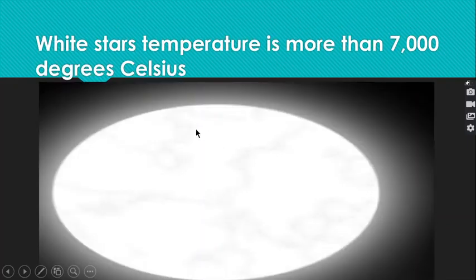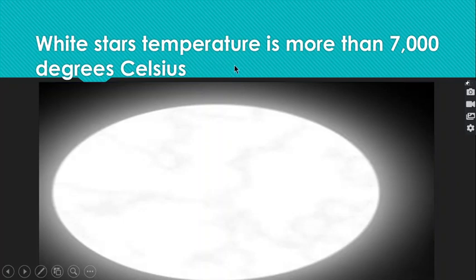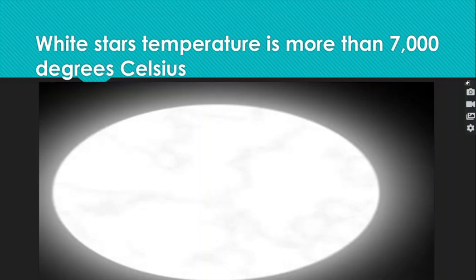Now, white stars. These are the white stars and their temperature is more than 7,000 degrees Celsius. These are colder and smaller than the blue giant stars. These are also among the brightest stars in the sky. According to their temperature, you can observe their different colors.